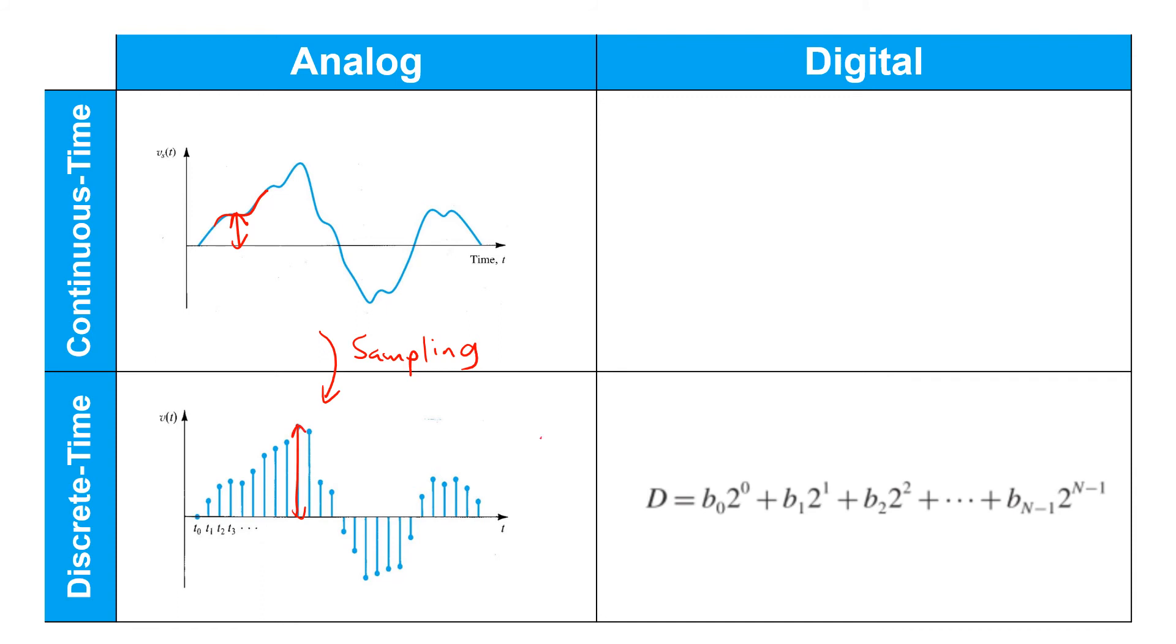Such signals can then be quantized. That is, they're rounded to the nearest signal level that can be represented by a string of bits.